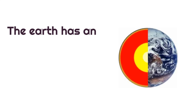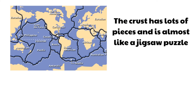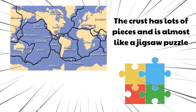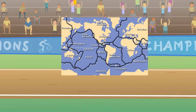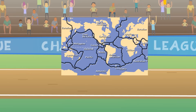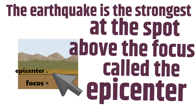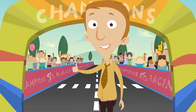Let's review: the earth has an outer shell called the crust. The crust has lots of pieces like a jigsaw puzzle, and all the pieces are always moving. If they move too fast, that can cause an earthquake, which changes earth's surface and can damage roads, bridges, buildings, and crack up the earth. The earthquake is strongest at the spot above the focus, called the epicenter — you don't want to be near the epicenter. Thanks for learning about earthquakes — a powerful way that earth's surface changes!